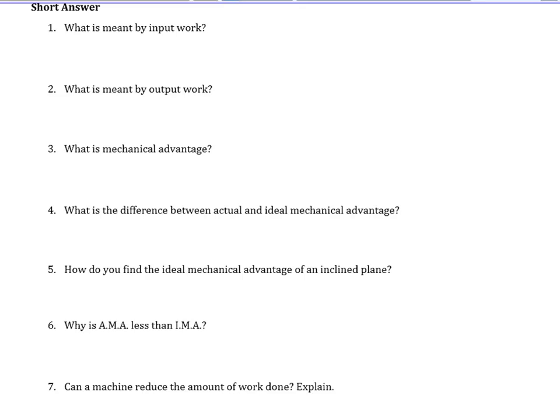These questions are all about input work, output work, ideal and actual mechanical advantage. When you use a machine, it complicates things a little bit, because there's more than just you and the object — there's this intermediate step in between. It doesn't matter if it's a lever, a ramp, a pulley, or what, but there's always something else. Usually we're using a ramp because we need to get something to a higher spot and we can't just pick it straight up. So we use a ramp to make that easier — if we use a ramp, we don't have to push as hard. We push this way, and the ramp pushes this way.